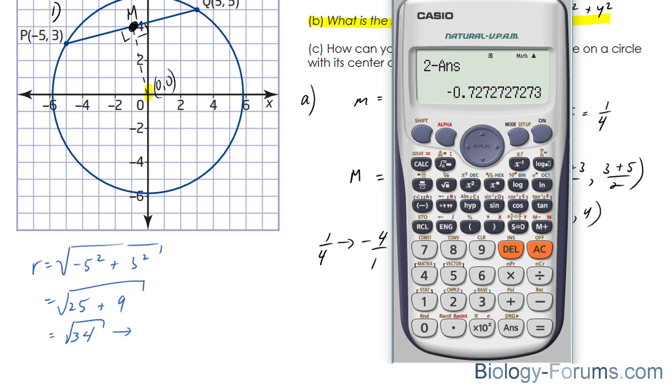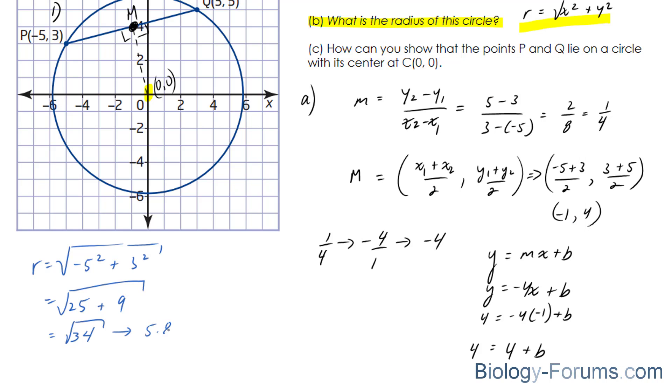And just to make sure, the square root of 34 is slightly less than 6 and that appears to be so in this graph, 5.83.